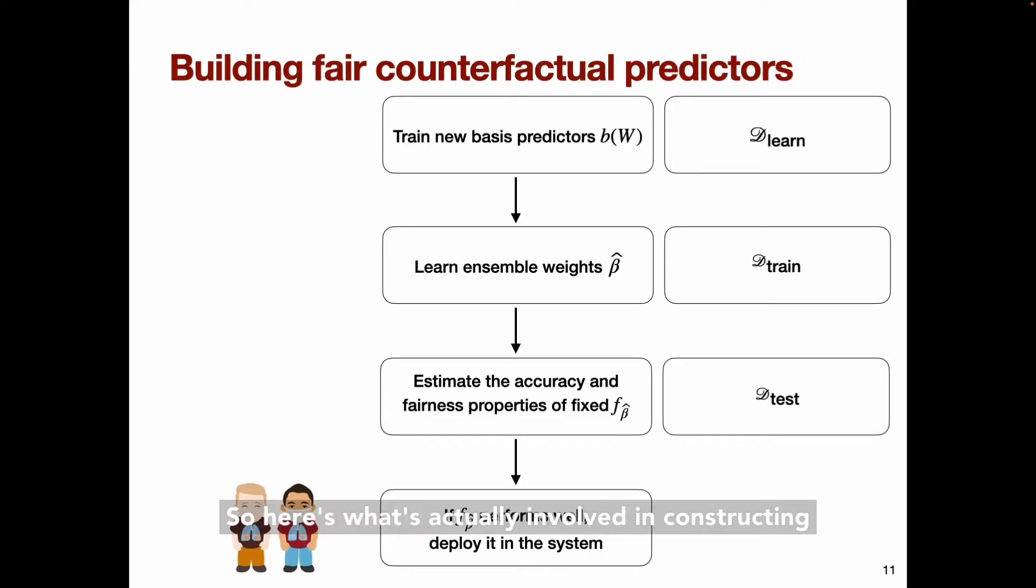So here's what's actually involved in constructing a counterfactually fair predictor. If we want to train new basis functions rather than just using an existing set of predictors or some fixed basis, we'll train these on a dataset D learn. If not, we can skip directly to D train, which is the dataset we use to estimate the optimal ensemble weights.